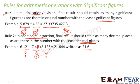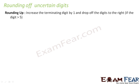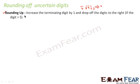Now we will learn how to round off uncertain digits. In any number, for example 4.8923, the digits 4, 8, 9, 2 are considered reliable and the last digit is the uncertain digit. There are two procedures: rounding up and rounding down. In rounding up, we increase the terminating digit by 1 and drop off digits to the right, if the digit being removed is greater than 5.